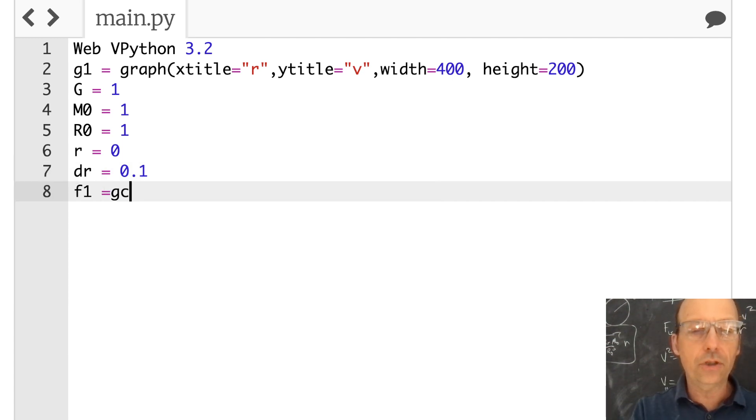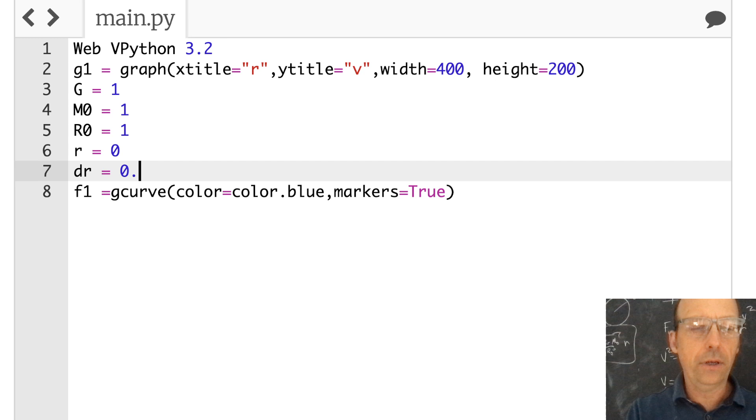And then I'm going to say G equals 1, m0 equals 1, r0 equals 1, r equals 0, dr equals, let's say, 0.1. And then I'm going to make a function, f1 equals gcurve, color equals color.blue. Markers equals true. Now I'll just leave a dot every time I put a point right there. Let's put this at 0.2.